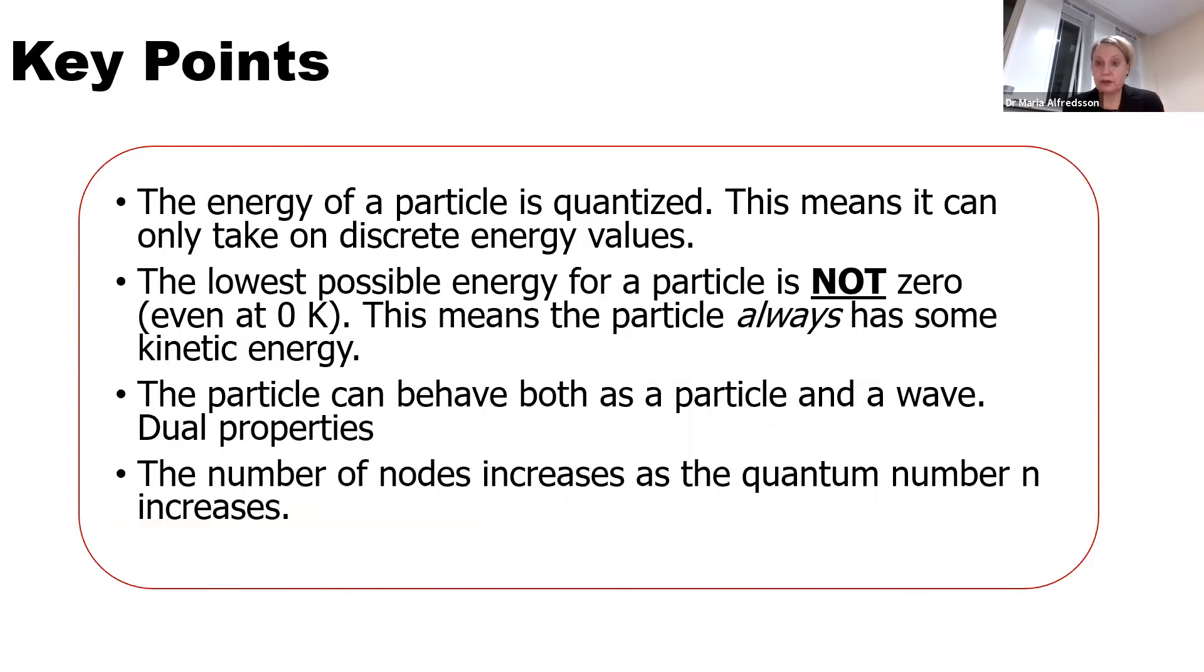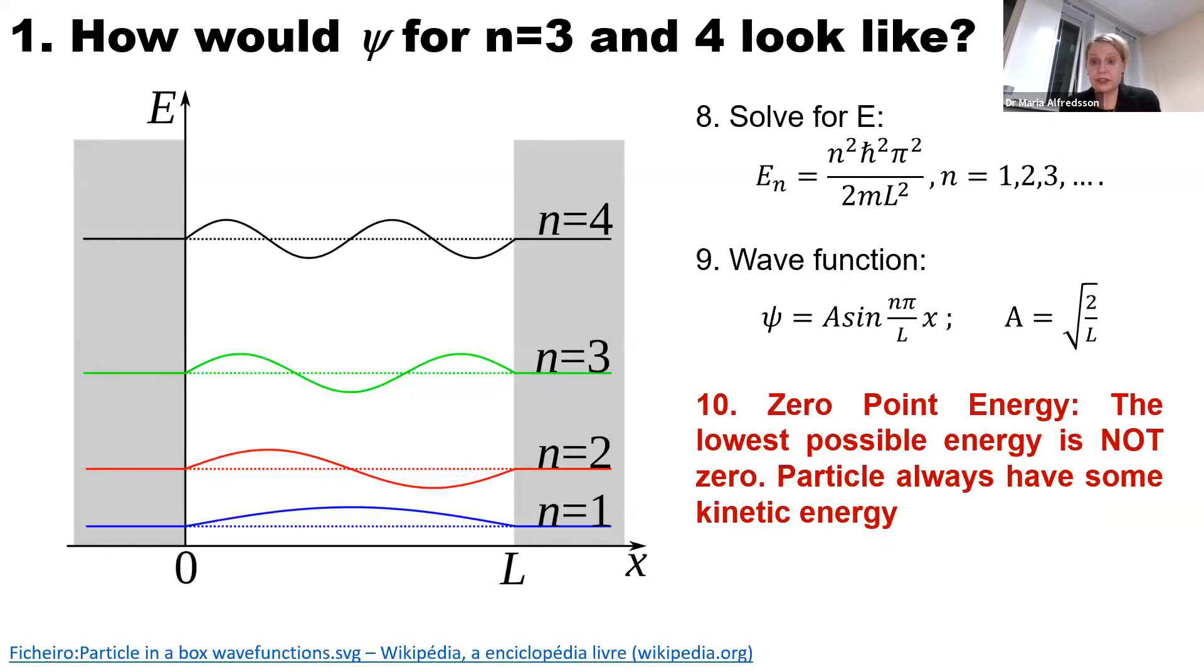The key point of this first part of the lecture was that you should know what is a quantized particle energy level and what is zero point energy. A quantum particle has both particle and wave properties. You should know what the quantum number is and that the nodes are increasing with the quantum number. That means if we go back and have a quick look at this picture, the wave number or the wave is increasing, so the wavelengths are getting shorter. So it has more energy.